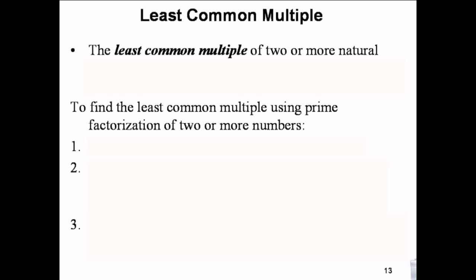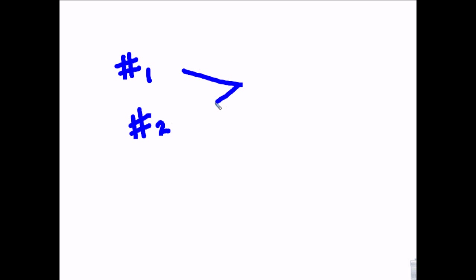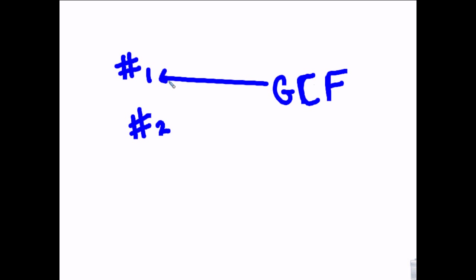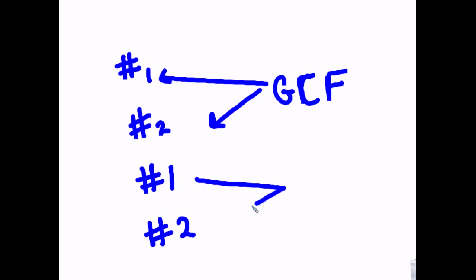The least common multiple is the smallest number that those two numbers will go into. So they're kind of backwards concepts: the GCF goes into the numbers, and the numbers go into the LCM.